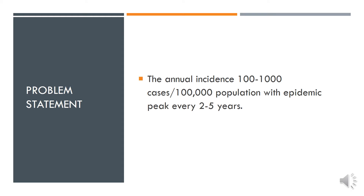In most parts of the world, the annual incidence of mumps in the absence of immunization is in the range of 100–1000 cases per 1 lakh population, with an epidemic peak occurring every 2–5 years. A natural infection with this virus is thought to confer lifelong immunity.